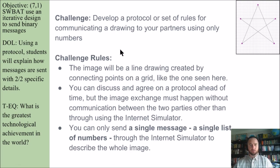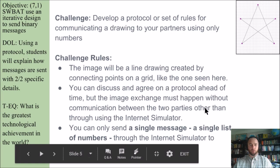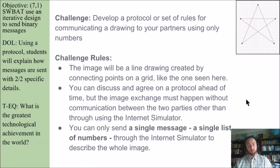Here are the rules. The image will be a line drawing created by connecting points on a grid, like the one seen here. You can discuss and agree on a protocol ahead of time, but the image exchange must happen without any communication between the two parties other than through the Internet Simulator — no talking, no chat, no finger waving, nothing. You can only send a single message, a single list of numbers, through the Internet Simulator to describe the whole image.